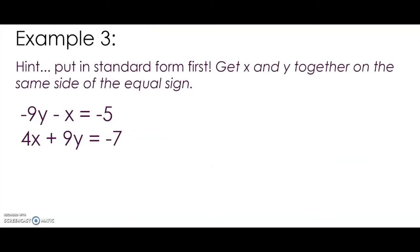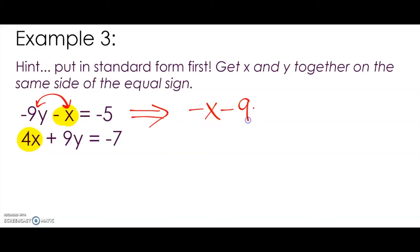Let's try one more example. This example is a little different than the first two because things are not stacked up. My negative 1X and my 4X are not stacked up with each other. So we need to swap the location of the X and the Y — I'm just going to move the X over to the left side, and the minus 9Y to the right side of the equation. My negative 5 is still going to stay there.